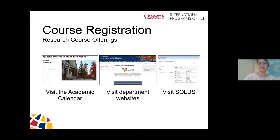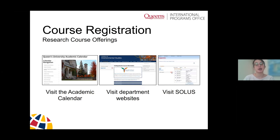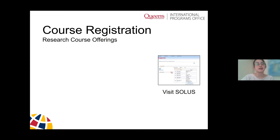After you determine those parameters, you'll need to research the course offerings available to you. There are three ways to do this: first, you can visit the academic calendar, an online tool that lists all courses offered in the last five years in the Faculty of Arts and Science. You can also visit department websites for in-depth information. But the most definitive way to research course offerings is through SOLUS — the online student administrative and financial center where you will be enrolled in courses and find your course schedule.